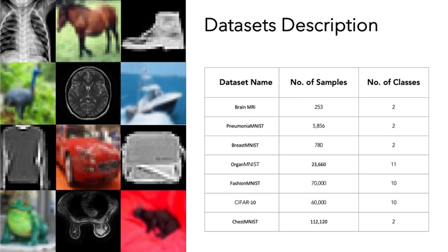Before talking about the results and discussion, we would introduce our datasets. We used seven benchmark datasets: Brain MRI, Pneumonia MNIST, Breast MNIST, Organ MNIST, Fashion MNIST, CIFAR-10, and Chest MNIST.